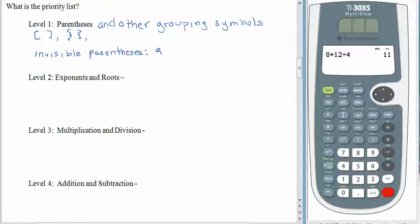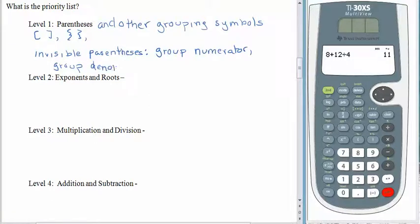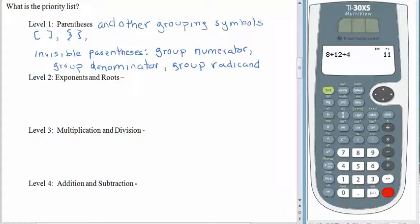Invisible parentheses group numerators. They group a denominator. And they also group anything that's held underneath a radical, which you know is called the radicand. It's pretty hard to take the square root of something if you don't know what the value of the something is first. After that, we look at exponents and roots.